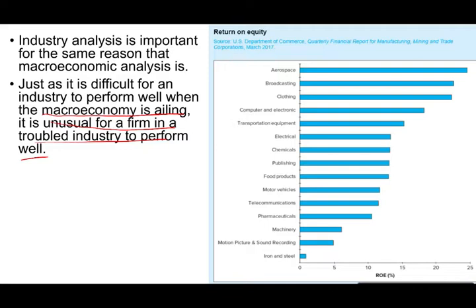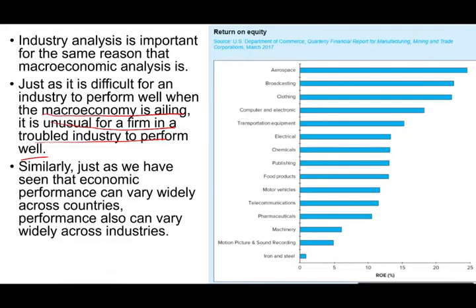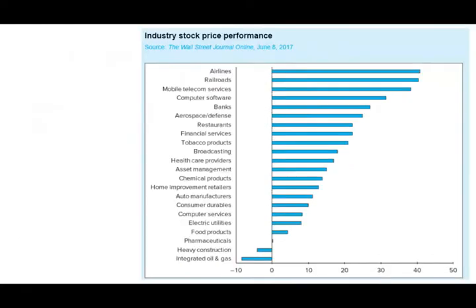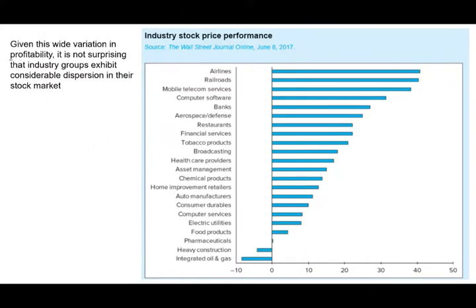After we look at the macroeconomy, not all industries perform the same way. Even if the macroeconomy is doing well, we still have to look at a specific industry. For example, looking at return on equity for certain industries as of March 2007, iron and steel had roughly 1% return on equity, while aerospace was around 25% and broadcasting around 24%. So not all industries perform the same way, and their stocks will also have different performance.